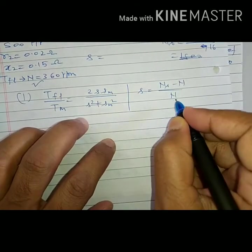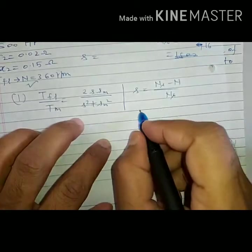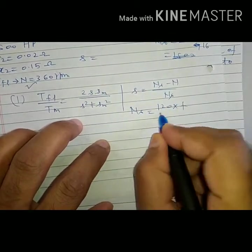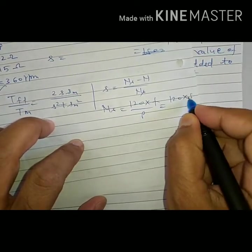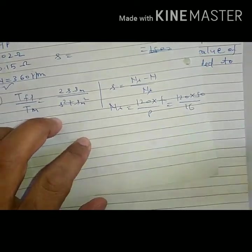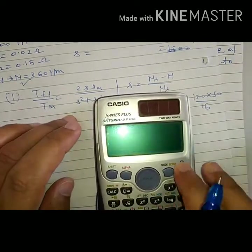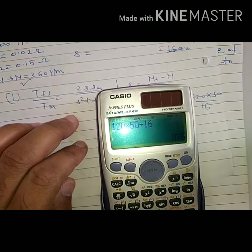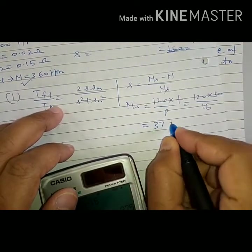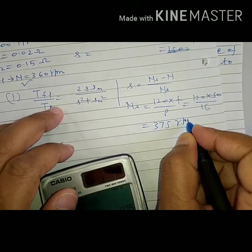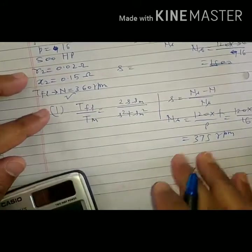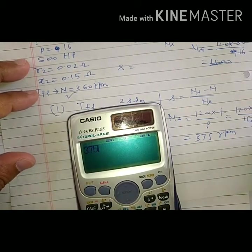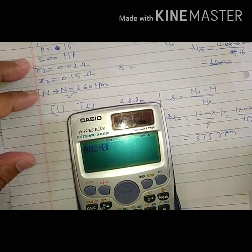N is given as 360 and NS we need to find. NS is 120 times F by P, that is 120 times 50 by 16, which comes as 375 RPM. Therefore slip value will be 375 minus 360 divided by 375.